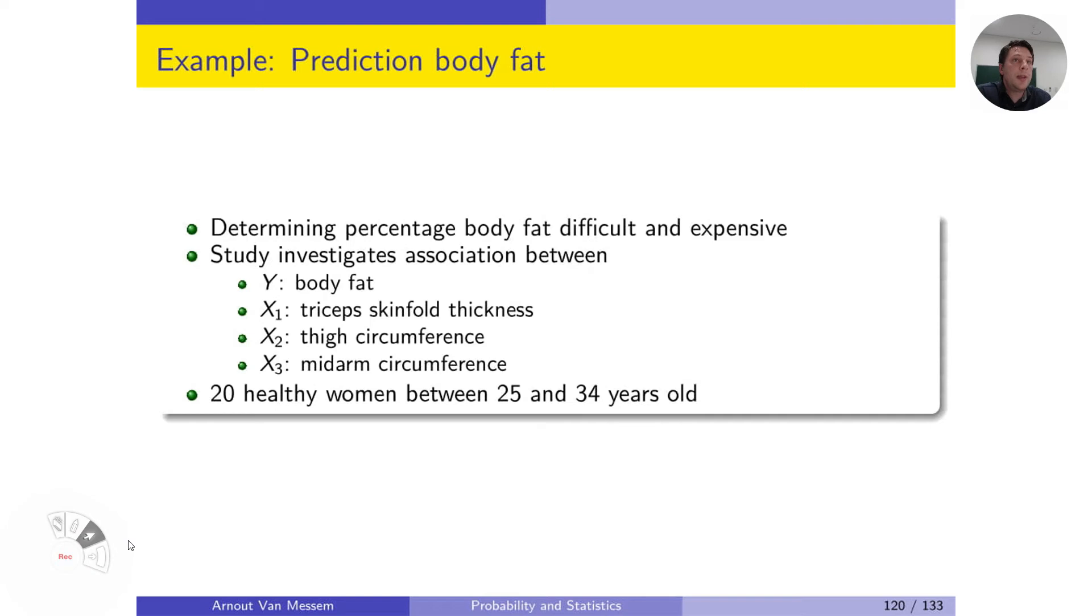So it would be better if we have a model that can predict the body fat percentage based on some easy measurable predictors. The predictors that we will take into account are the thickness of the triceps skinfold, the circumference of the thigh, and the circumference of the mid-arm.